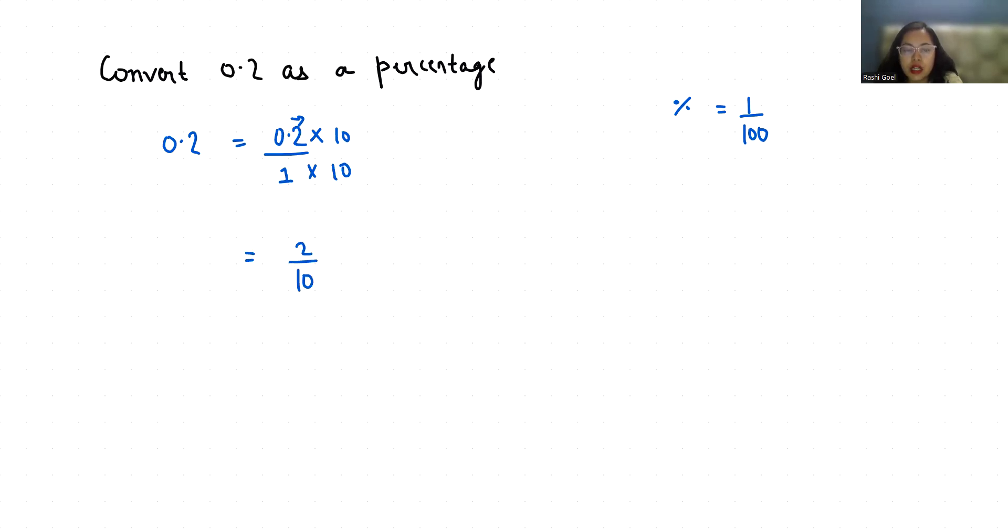Now we have to convert to percentage and in percentage the denominator is 100. So to convert 10 into 100 we can multiply by 10 and we know that if we make any change in denominator we have to make the similar change in numerator. So our numerator becomes 20 and denominator becomes 100.